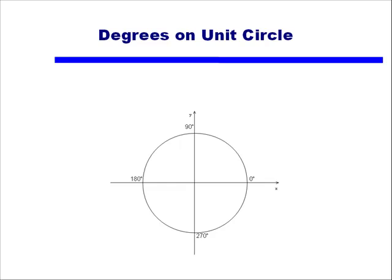We've seen this picture before. We talked about how if we had a unit circle, the positive x-axis would represent 0 degrees, our positive y-axis would represent 90 degrees, our negative x-axis would be 180 degrees, and our negative y-axis would represent 270 degrees. But what I want to do is start putting on here not just these four angles, but also 30 degrees, 45 degrees, and 60 degrees, because those were the angles we needed to memorize. And then looking at the other quadrants — 2, 3, and 4 — those would be angles with 45, 30, or 60 degrees as reference angles, because those are also ones we can find exact answers to.